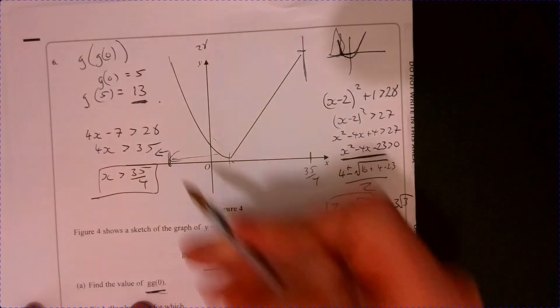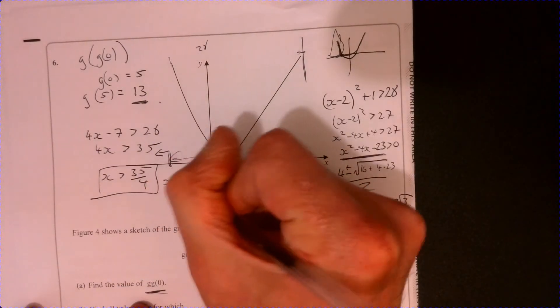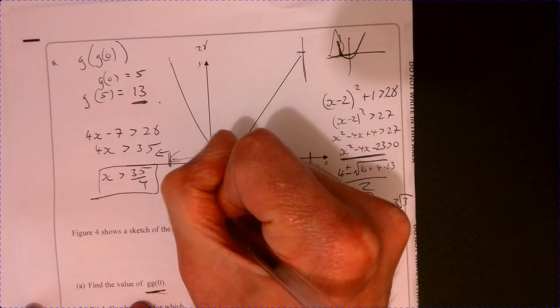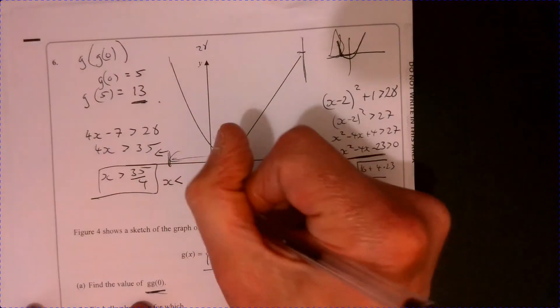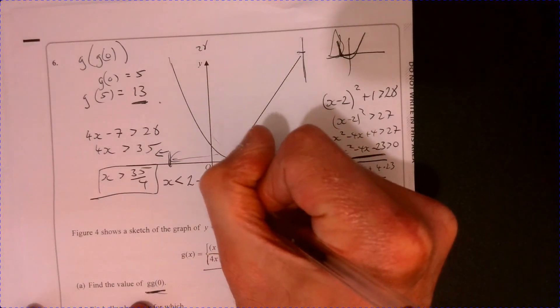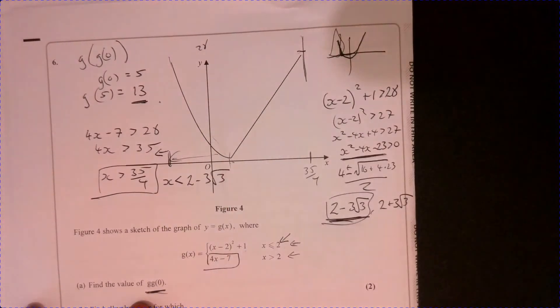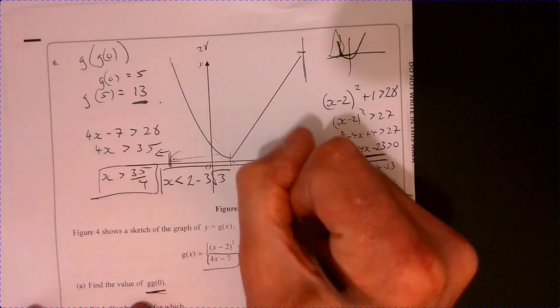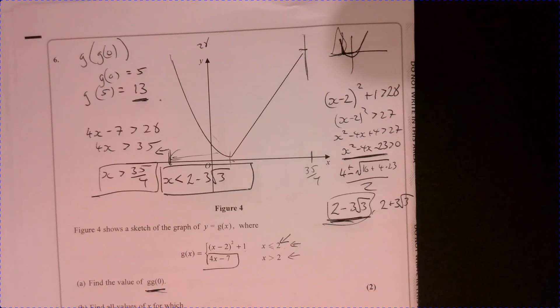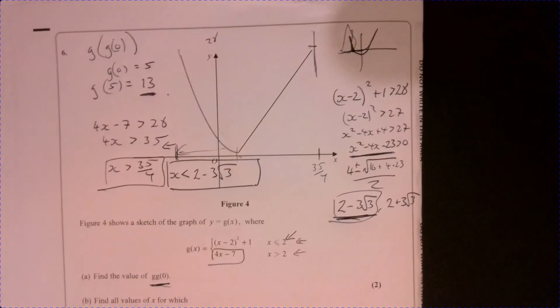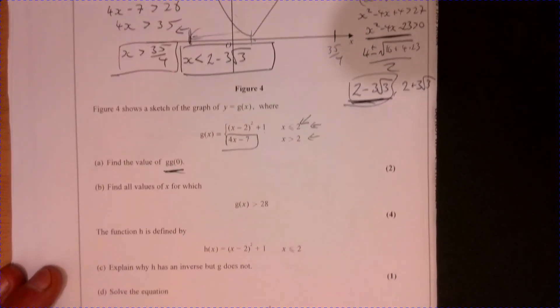So x could be more than 35 over 4. And also, x has to be less than 2 minus 3 root 3, okay? So we've got those two bits just there, all right? We found all the values of x that satisfy that.